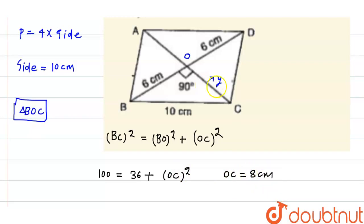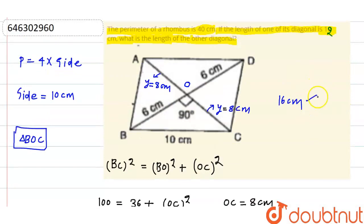Now, since it is 8 cm, this thing will also be 8 cm. Because we know that this will be bisected into equal sides. So, this is 8 cm also. So, the total length of this diagonal is 8 plus 8. That is 16 cm. So, the other diagonal is 16 cm.